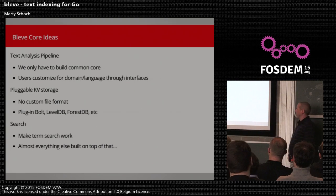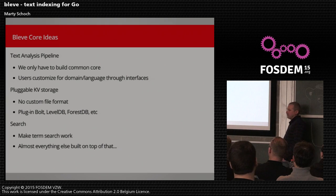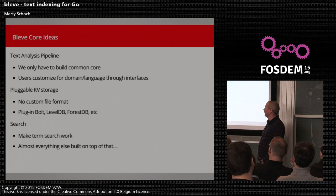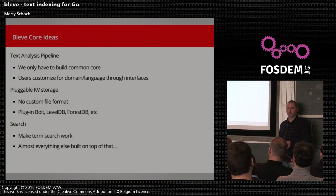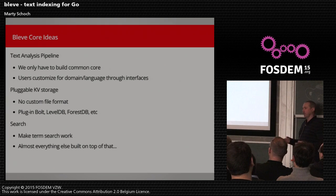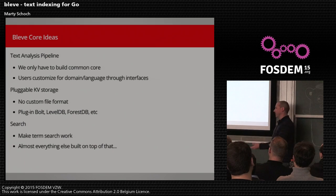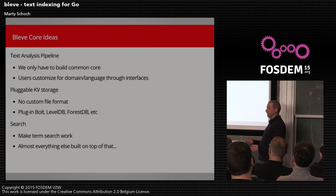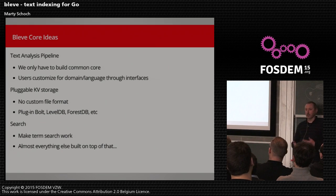That led to four core ideas. First, there's a text analysis pipeline. The idea is we just have to build the most important pieces first. If we get the interfaces right, users will come along and say, hey, we need this other stemmer or something. And if we get the interfaces right, it's easy for them to contribute that and add it to the ecosystem.